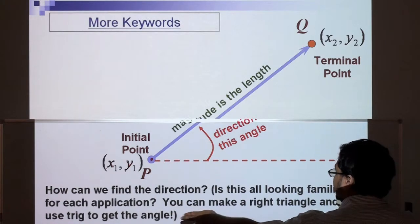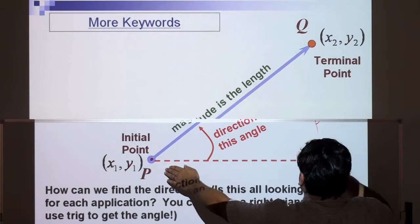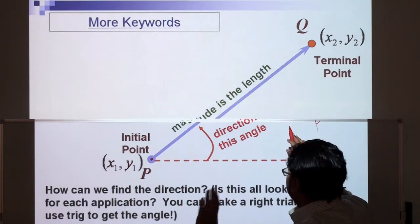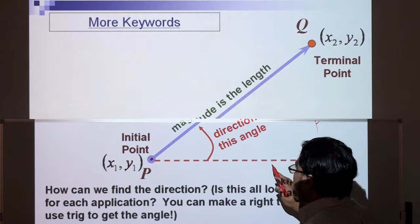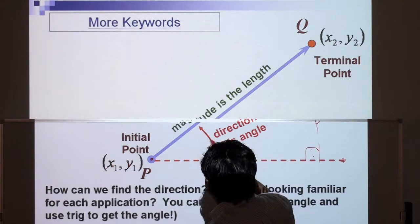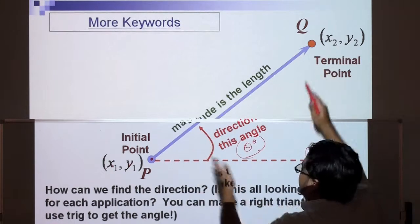So basically you can draw a line down here, you get a right angle like that, and then you can measure the length. We'll be doing that later. Initial point, terminal point, and the direction is in degrees here, and the magnitude or the length.